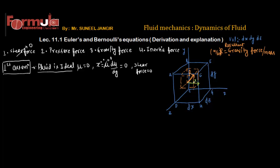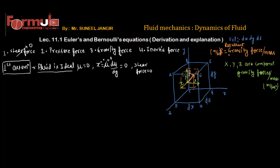X, Y, and Z are the component gravity forces per unit mass in their respective directions. Their units are also m/s², the units of gravitational acceleration. Gravity force is present and, since this fluid element is surrounded by fluid, pressure force is also acting all around it.